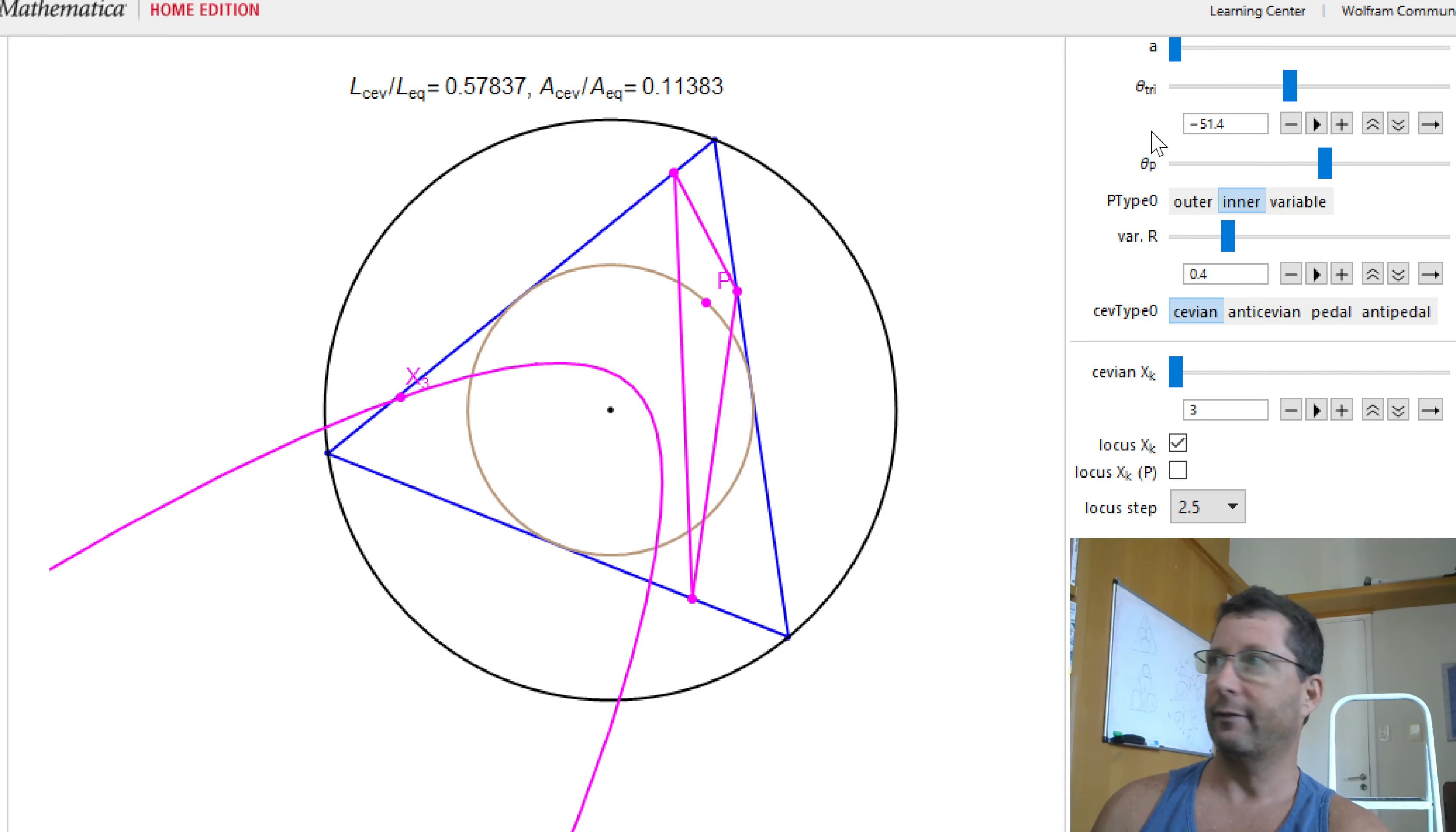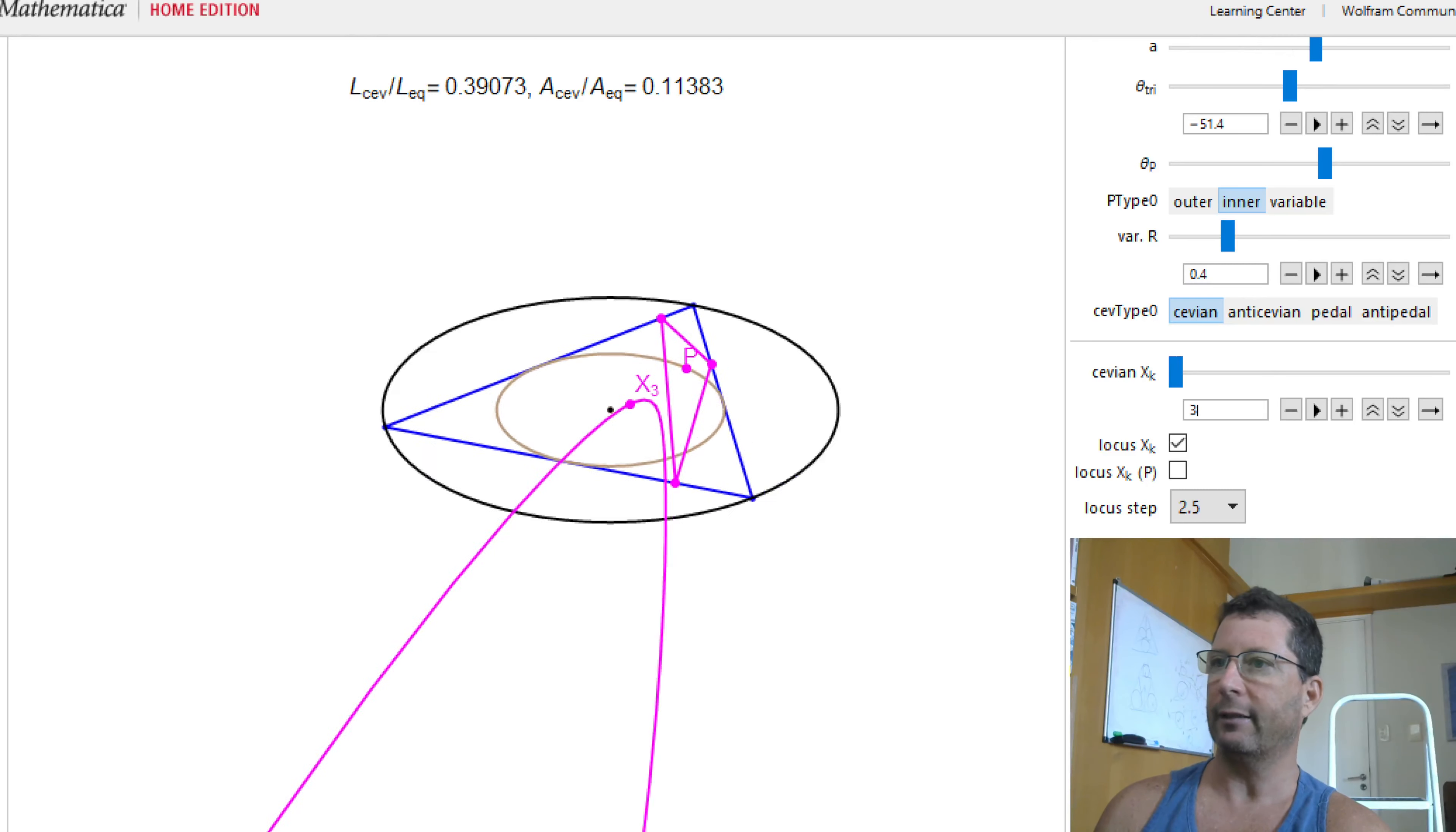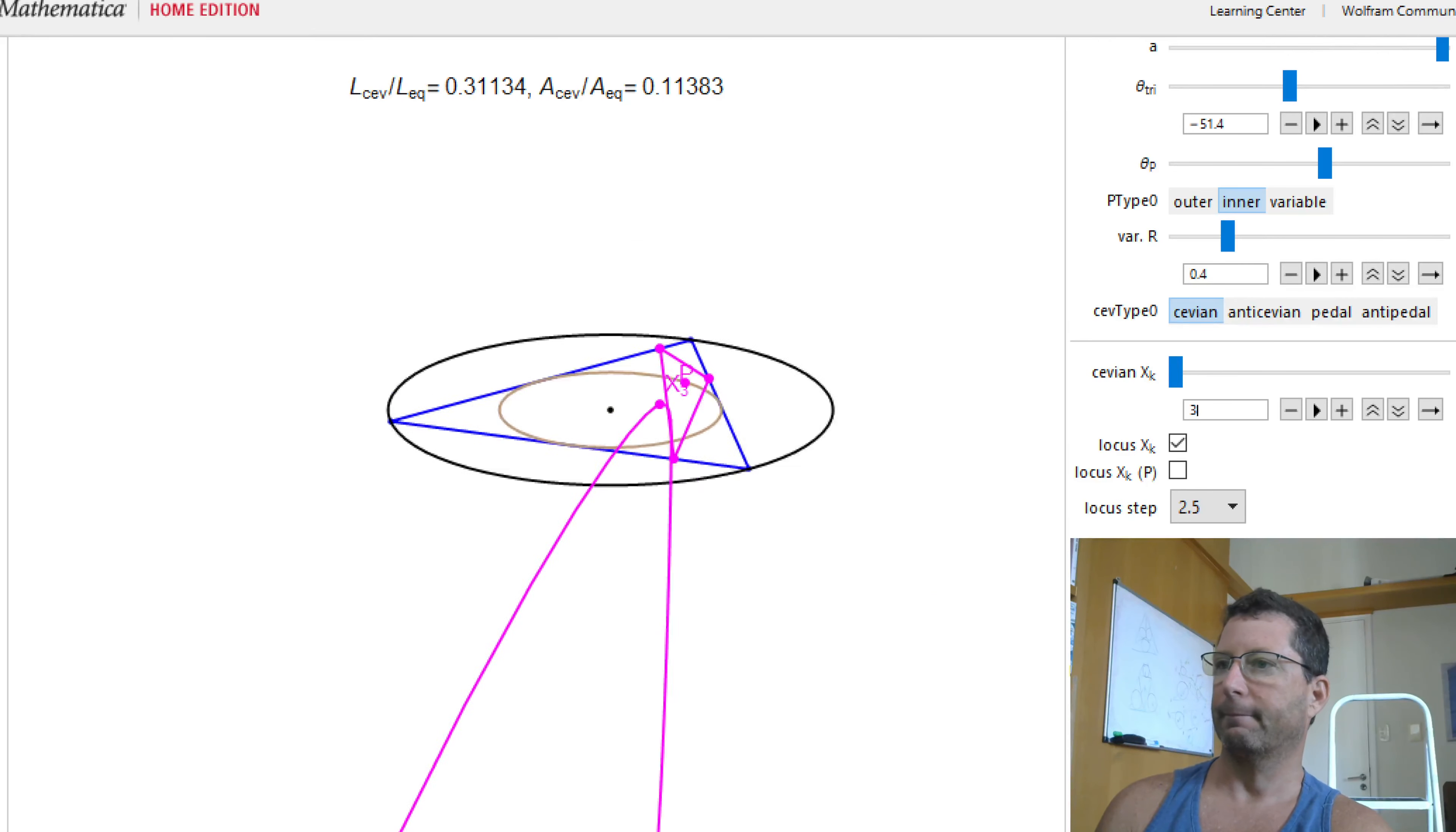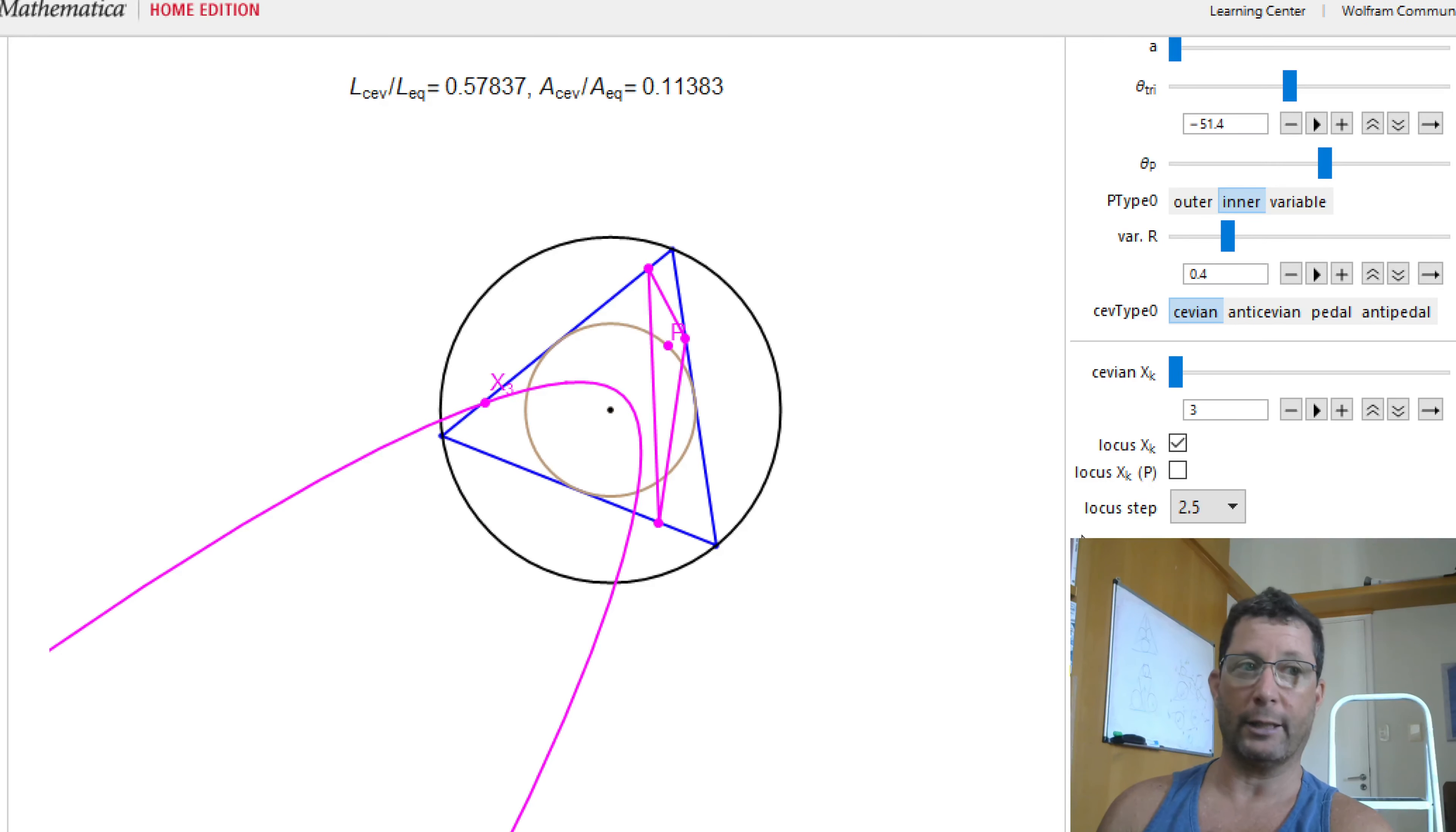Does this thing survive affine transformations? It doesn't look like it. You can see that I'm getting enormous asymmetries already. It does not look like this is going to survive. It's not going to survive. This thing is not going to remain a conic post affine transformation, but it looks like a beautiful parabola in this particular state here.